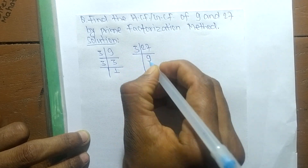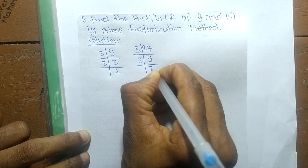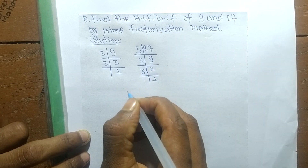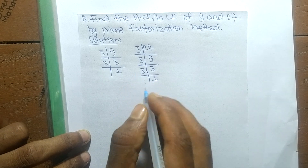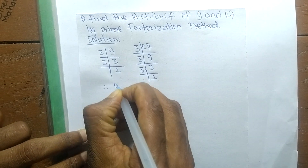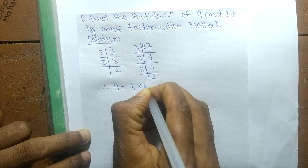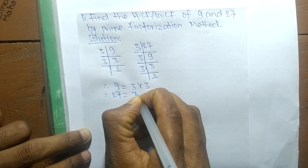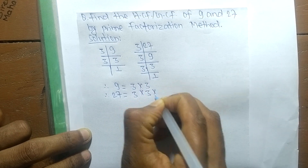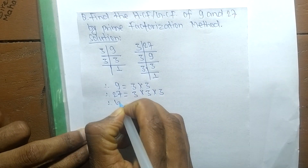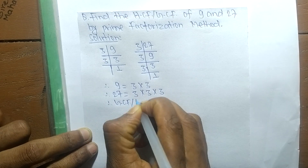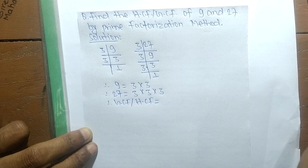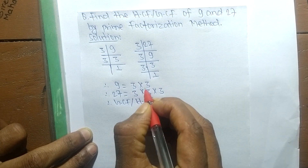Similarly, the prime factors of 27 are 3 times 9, which is 27, and 3 times 3 is 9, and 3 times 1 is 3. So we write: 9 = 3 × 3, and 27 = 3 × 3 × 3. Now we determine the common factors in both.